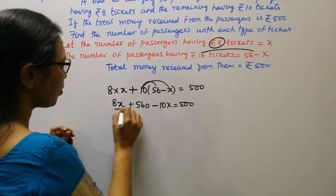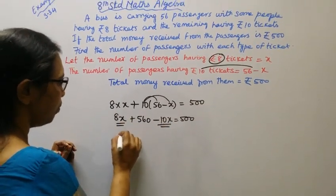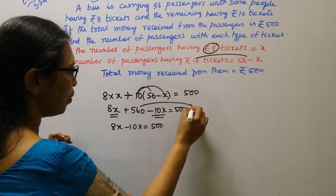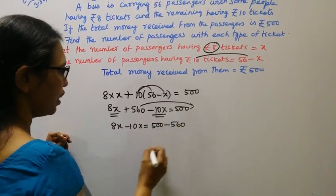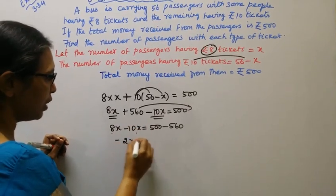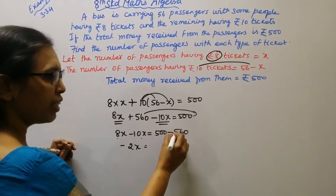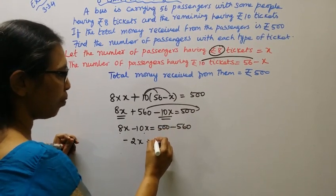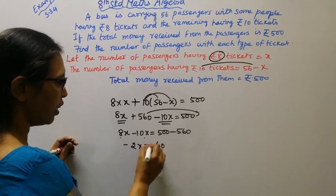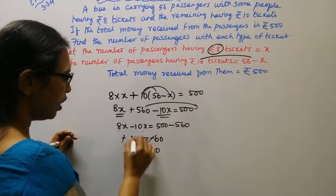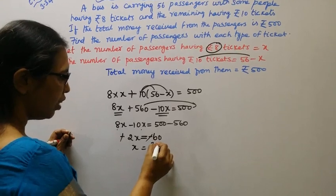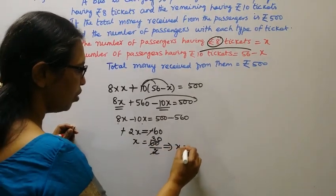Collecting like terms: 8x minus 10x equals 500 minus 560, so minus 2x equals minus 60. Dividing both sides by 2, x equals 30.